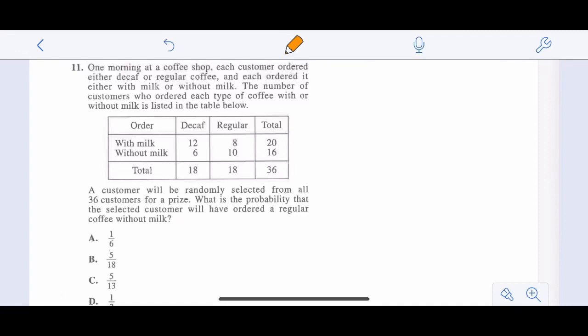For these questions, I'd generally like to skip straight to the question and avoid all this reading if possible. Come back to it if needed. So a customer will be randomly selected from all 36 customers. We have 36 customers for a prize. What is the probability?